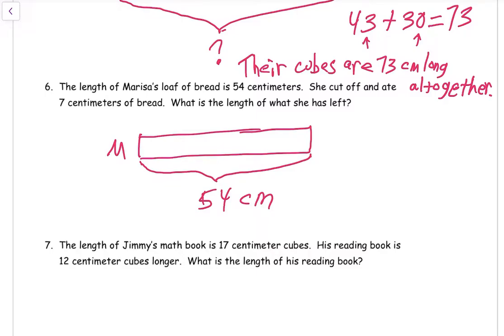She cut off seven centimeters of bread. And what's the length of what she has left? So let's see, she cut off. This is what she ate. And everything else is left. So she ate seven centimeters. And we're trying to figure out how much of it is left. So we're looking for two parts of 54. We know one of them is seven. We got to find the other one. So when you're looking for a missing part, we subtract.